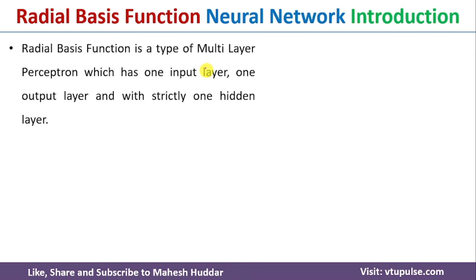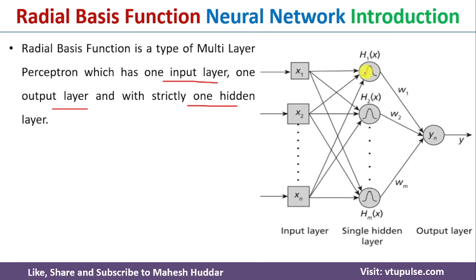Radial basis function is a type of multi-layer perceptron network which has one input layer, one output layer, and strictly one hidden layer. So while a multi-layer perceptron network can contain one or more hidden layers, in radial basis function the number of hidden layers is exactly one. This is how the radial basis function looks: there is the input layer, the output layer, and only one hidden layer.